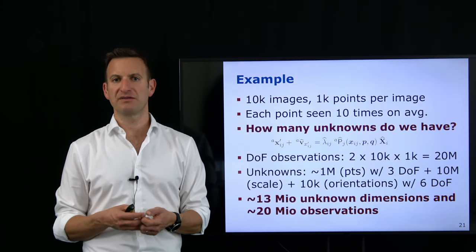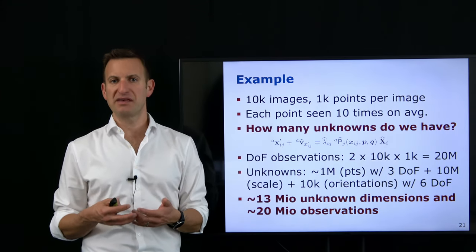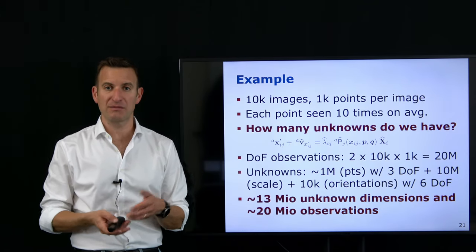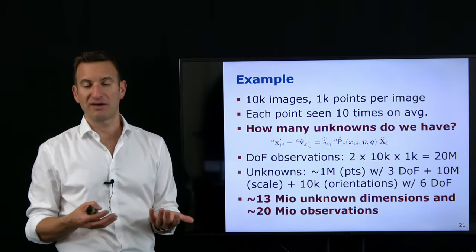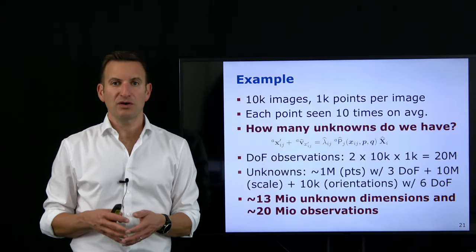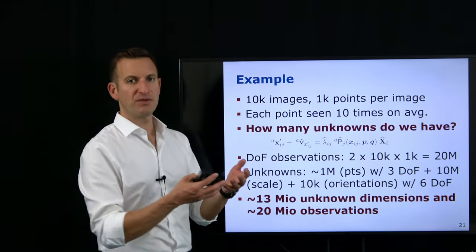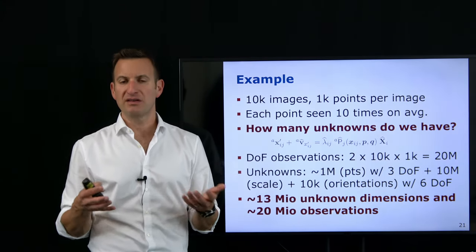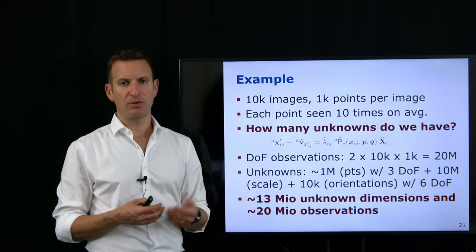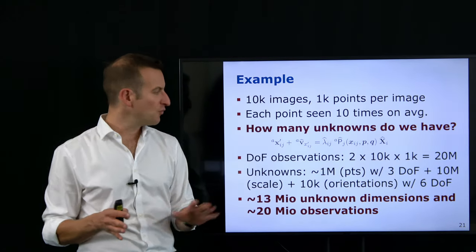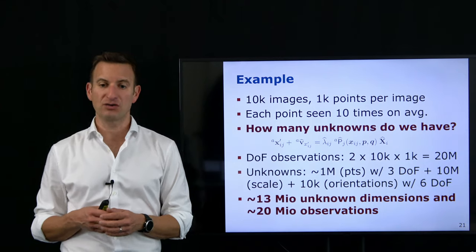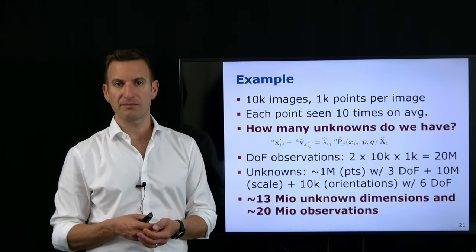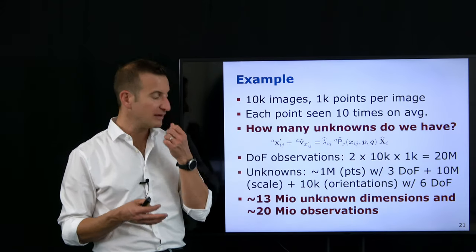By moving back into the Euclidean world, we get rid of those scale parameters, reducing the number of unknowns from 13 million to something like 3 million — a big decrease. Turning the expression back into Euclidean coordinates means dividing by the last component: a three-dimensional homogeneous vector (2+1 dimensions) becomes a two-dimensional Euclidean offset vector. The projection is expressed as the first and second row divided by the third row — the normalization from the homogeneous-to-Euclidean mapping. I recommend going back to the lectures on homogeneous coordinates if this is unclear.